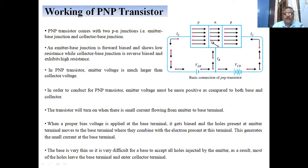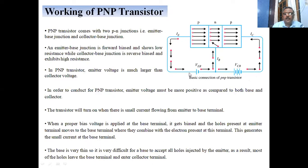In the PNP transistor, the emitter voltage is much larger than the collector voltage. In order to conduct, the emitter voltage must be positive compared to both the base and the collector. The transistor will turn on when there is a small current flowing from the emitter to the base and then to the collector.